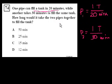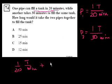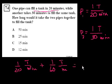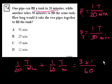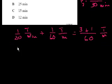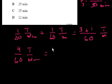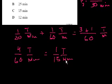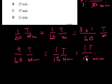How long would it take the two pipes together to fill the tank? Their combined rate is 1/20 plus 1/30 tanks per minute. Common denominator is 60: 1/20 is 3/60, plus 1/30 is 2/60, giving 4/60 — wait, that equals 5/60 which simplifies to 1/15 tanks per minute, or 1 tank per 15 minutes. So it takes 15 minutes. Choice C.